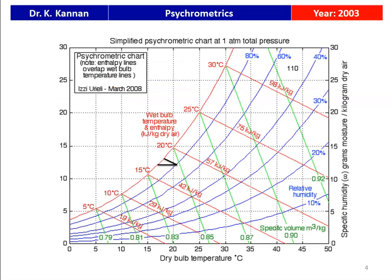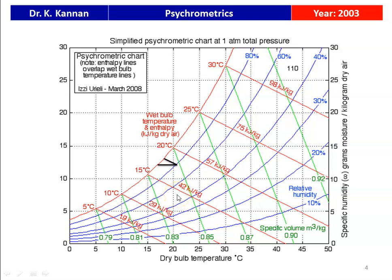The correct answer is that the dew point temperature is less than the wet bulb temperature. We refer to the psychrometric chart. This is the 80 percent relative humidity line. To measure the wet bulb temperature, we draw a line parallel to the enthalpy line — the inclined line reads the wet bulb temperature on the saturation line. To find the dew point temperature, we draw a horizontal line. So dew point temperature is always less than the wet bulb temperature for 80 percent relative humidity.